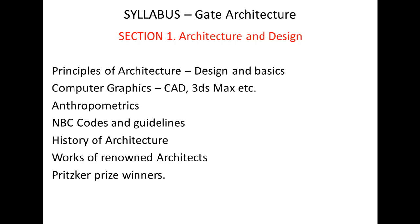Section one is basically about Architecture and Design. The main topics include principles of architecture, like what you may have studied from Francis DK Ching's book on form, space, and order. It also covers computer graphics like AutoCAD, 3ds Max, SketchUp, and Revit — they will ask you commands for one-mark questions. You should know basic anthropometrics, NBC codes and guidelines, and history of architecture from prehistoric till the deconstruction style, covering both western and Indian architecture, and works of renowned architects and Pritzker Prize winners. Section one comprises about 20 to 24 percent of weightage.